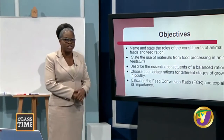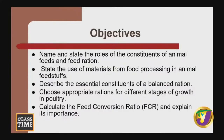The objectives we want to achieve this morning: first, I want you to be able to name and state the roles of the constituents of animal feeds and feed ration. Second, state the use of materials from food processing in animal feedstuffs. Third, describe the essential constituents of a balanced ration and choose appropriate rations for different stages of growth in poultry. And finally, calculate the feed conversion ratio and explain its importance.